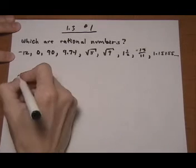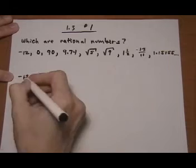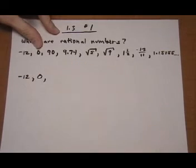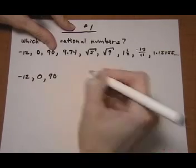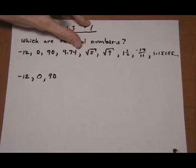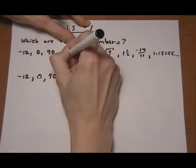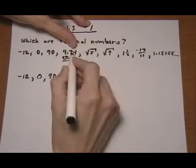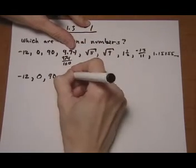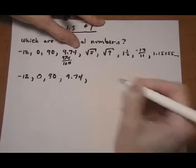Minus 12? Yes, because I could write that as minus 12 over 1. Zero? Yes, I could write that as 0 over 1. 90? Yep, 90 over 1. 9.74 — the decimal ends, so I could say 974 and the decimal goes to the hundredths place, so I could say 974 over 100. So any ending decimal is a rational number.